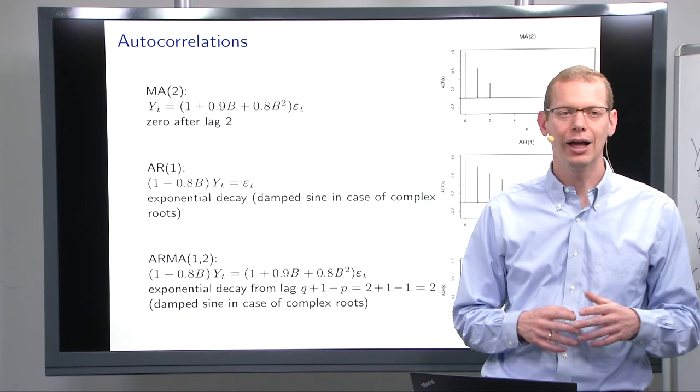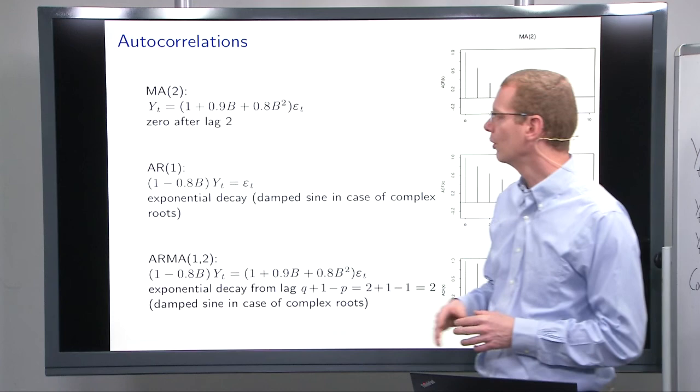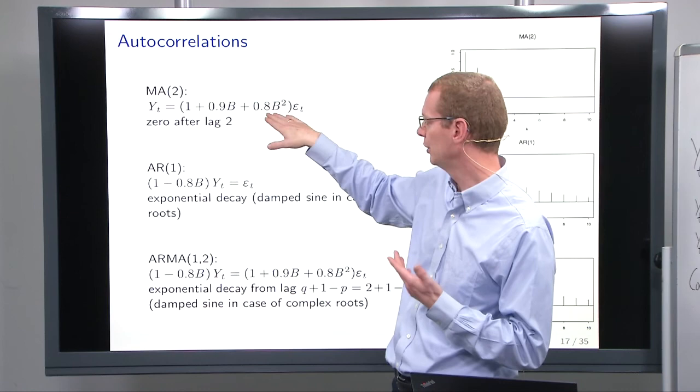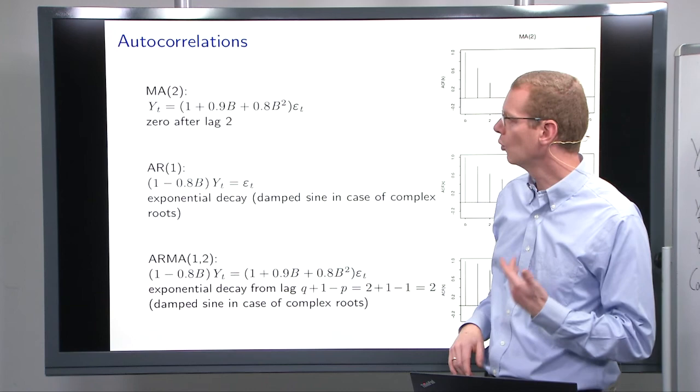So, as some examples, we're going to look at some processes, and I will give you many more processes to look at later on, but not during the lecture here. So, if we have a so-called moving average model of order two, a particular one of that is this particular one where we have, of course, it has to be a second order polynomial B, one plus 0.9 B plus 0.8 B squared applied on epsilon T.